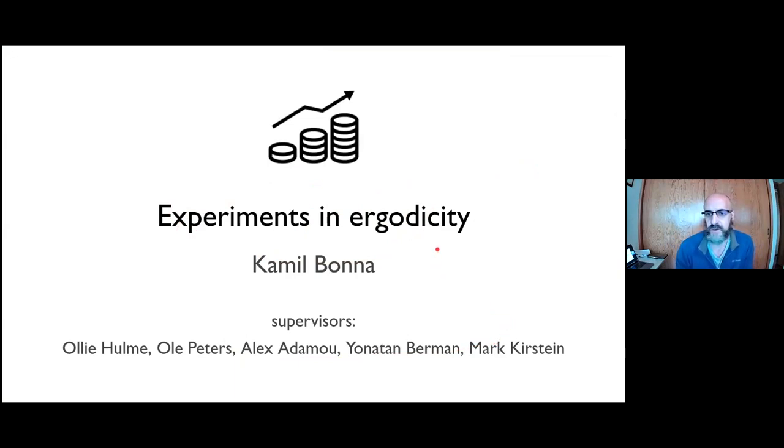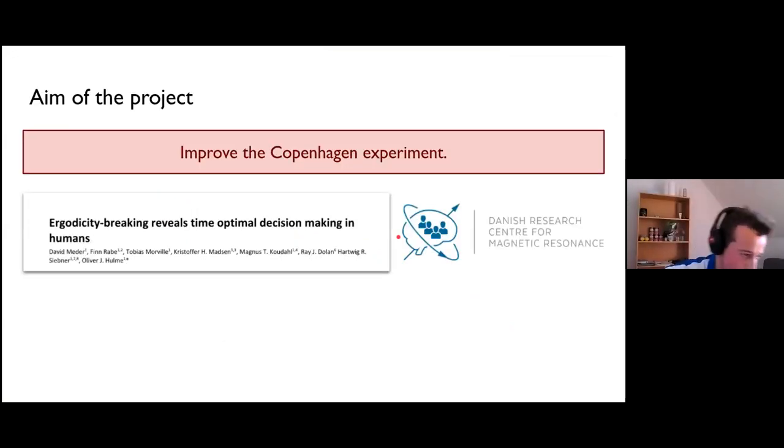Hello everyone, I'm going to start by explaining the aim of my project. The aim was very simple: it was to improve what we call the Copenhagen experiment. So what is the Copenhagen experiment? It is an experiment on choice and decision making which was conducted in Copenhagen a few years ago at the Danish Research Center for Magnetic Resonance. Here's the manuscript that will be soon published from this experiment.